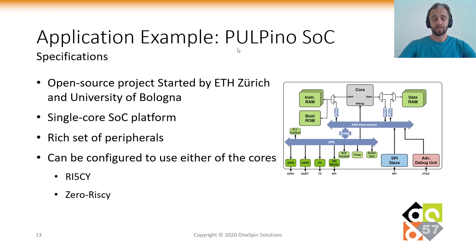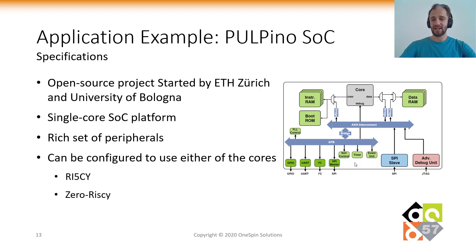The Polpino Platform was an example of a system-on-chip that OneSpin apps were applied to. It is part of the PULP open source project started by ETH Zurich and the University of Bologna. It's a single-core system-on-chip with a rich set of peripherals, configurable to use either the RI5CY core — the one we saw already — or ZeroRISCY, a 32-bit two-stage pipeline core.